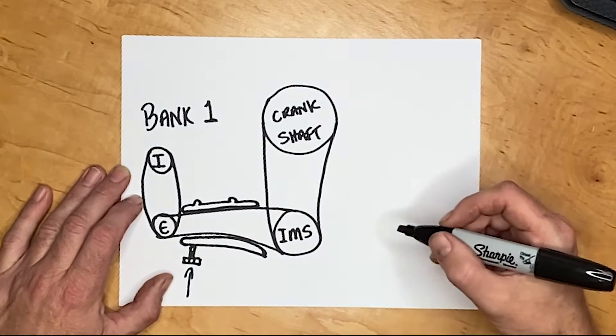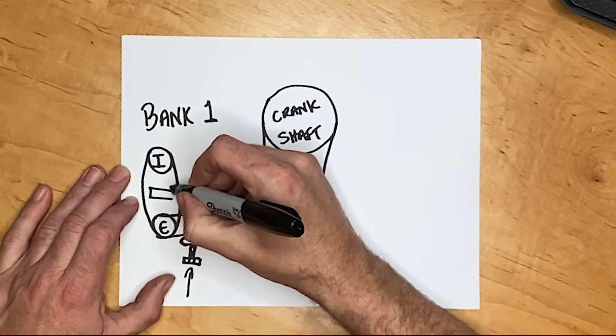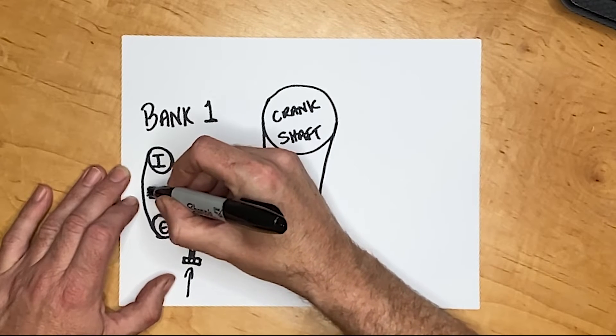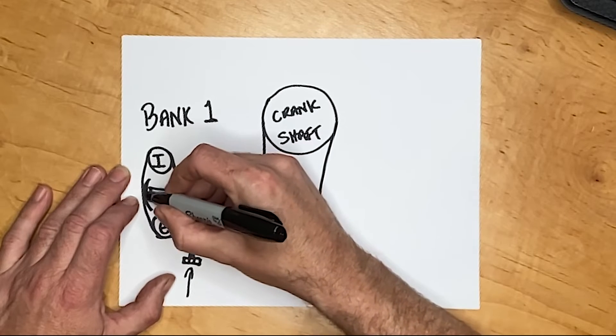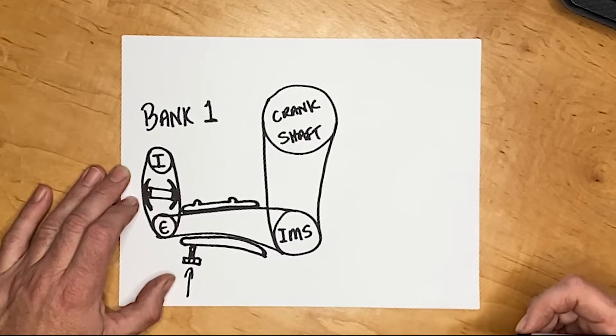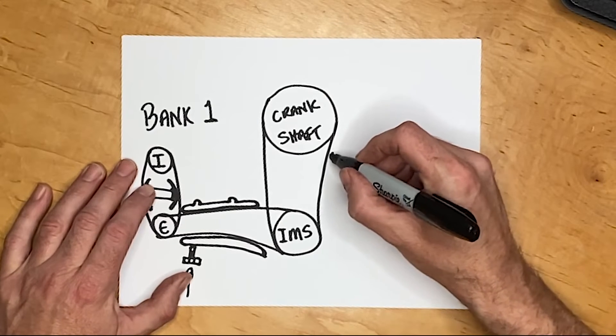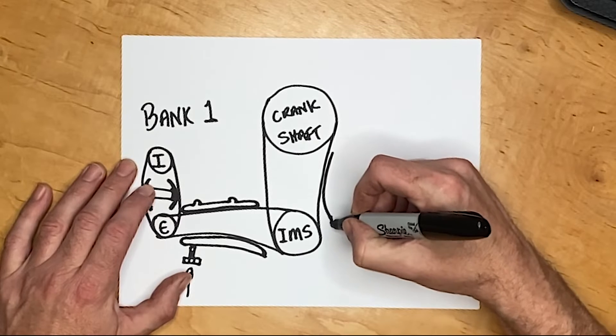And then on the chain that's on the cams itself we have a Vario cam. Now this Vario cam that we've talked about, it's kind of an on-off thing. If you are idling or poodling about it's in one position. If you start driving it like you stole it, it can change the timing of the cams and make it work better for that situation.